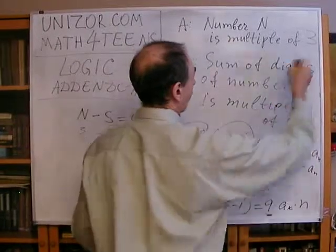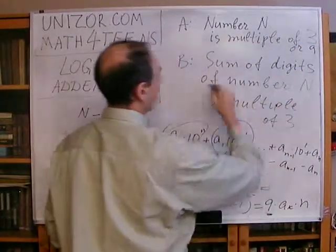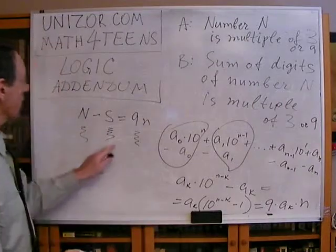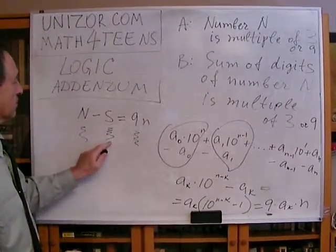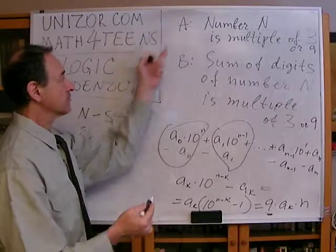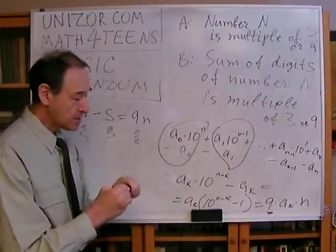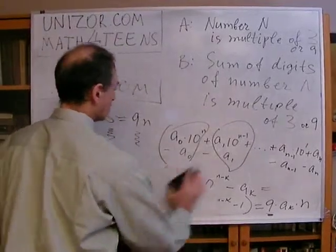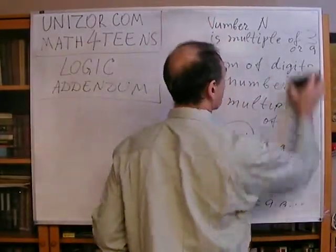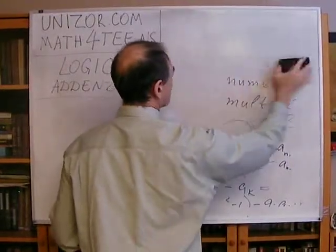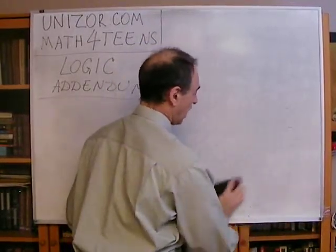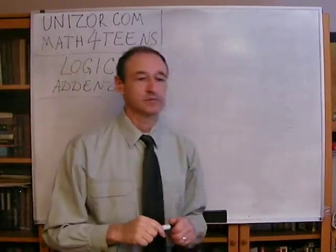So we've kind of proved both theorems: number N is a multiple of 3 or 9, and the sum of digits of number N is a multiple of 3 or 9 — they always go together. If one is divisible then the other is divisible, which means we can prove this theorem in both ways. A is a sufficient condition for B, and B is a sufficient condition for A. This is a short introduction to necessary and sufficient conditions. I will put a few exercises for this topic for self-study.